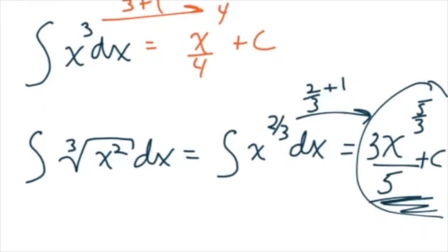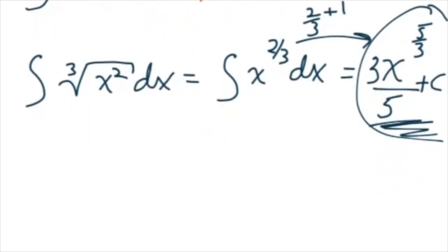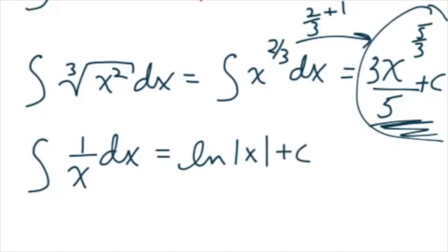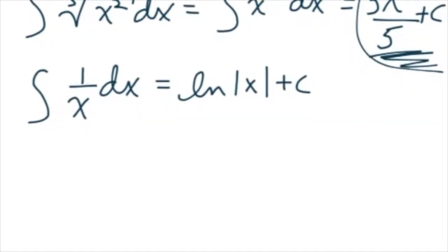And don't forget some of the special cases, right? One over x dx. You can't really pump that power up because negative one pumped up to zero will give me zero, and you can't divide by zero. That's just crazy talk, right? But you do know that the antiderivative of one over x is the natural log of x. And of course, we throw them in absolute values just to ensure that we're taking the derivative of a positive.